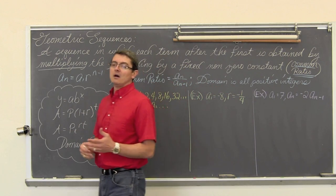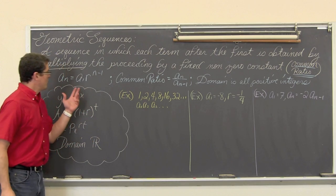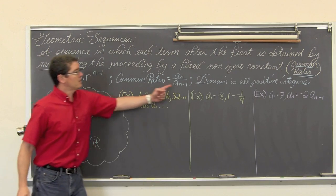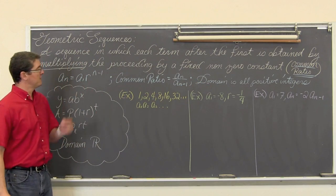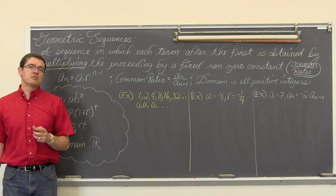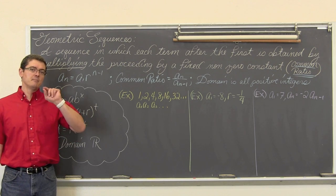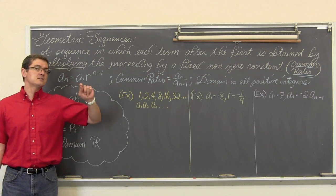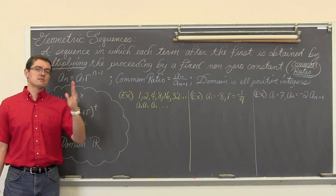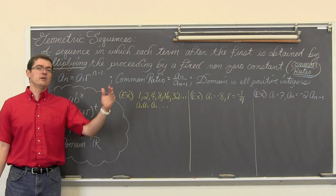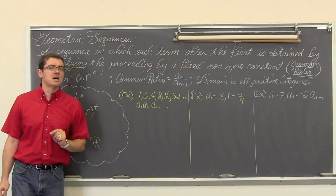If you remember with sequences, with the domain being just positive integers, if you were to graph the values from a geometric sequence, you would just get a bunch of distinct individual points above your n values of 1, 2, 3, 4, and so on. You would not want to connect those dots.